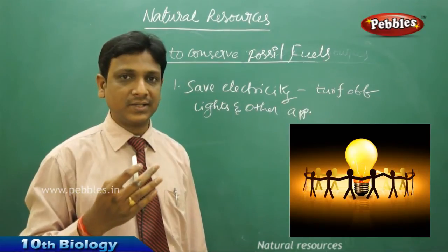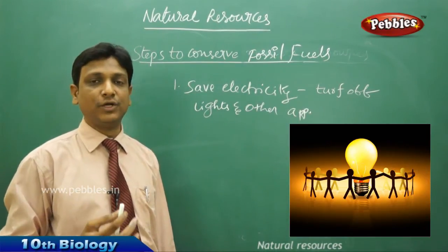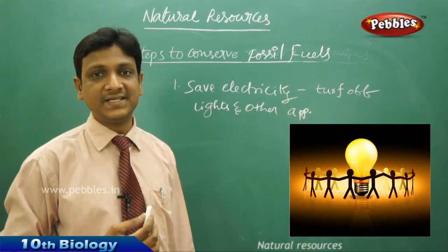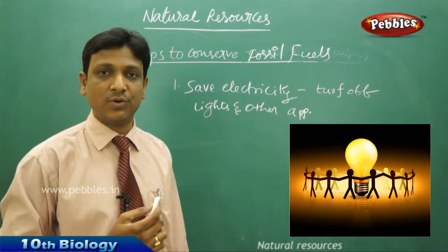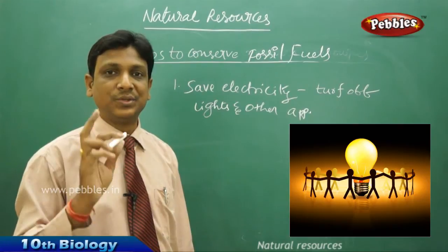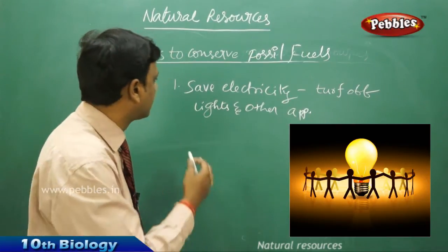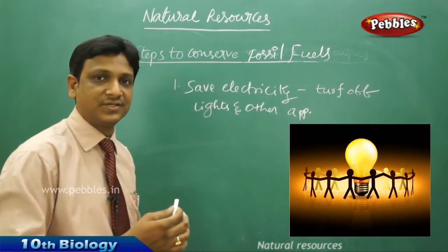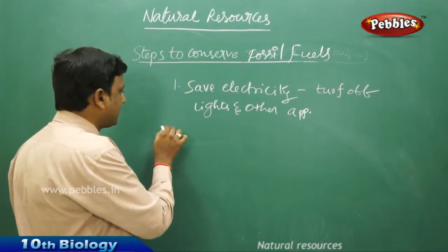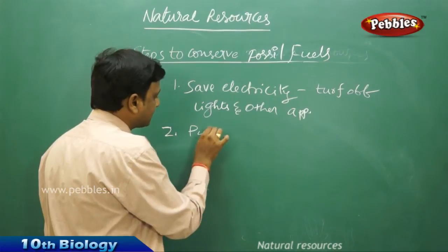You can go for CFLs instead of normal lights. And more than CFL, you have LED lights which save even more energy. You can go for LED lighting. You can also go for automatic sensors for your switchboards so that when you are not in the room, the lights automatically switch off. Otherwise, switch off fans and lights when they are not in use. In this way, you can conserve electricity and by that you will be conserving the natural resource coal.